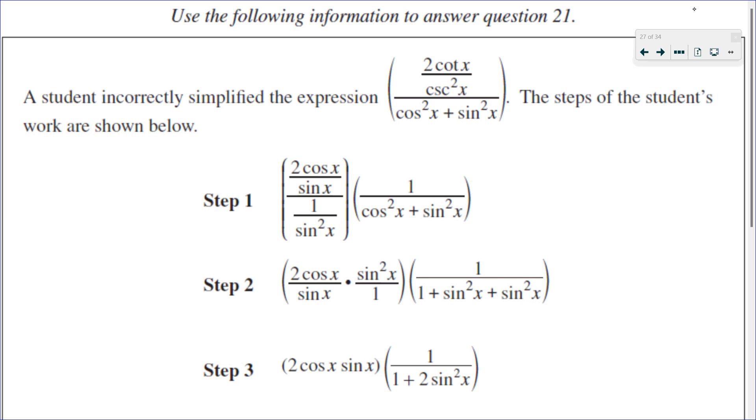Let's look at what the student did. We started with 2 cotangent of X. So that is 2 cos over sine. That's correct. And then we're dividing that by cosecant squared. Cosecant is the reciprocal of sine. So cosecant squared is the reciprocal of 1 over sine squared.